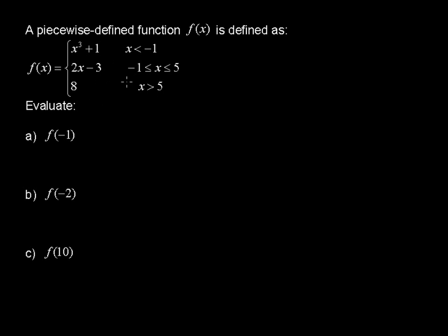We've got a few things going on. We'll find each of these pieces when we're asked to evaluate each of these values. Evaluate the function when x is negative 1. Remember, this value — negative 1, or what's in parentheses — is going to stand for x, or what is being plugged in for x.